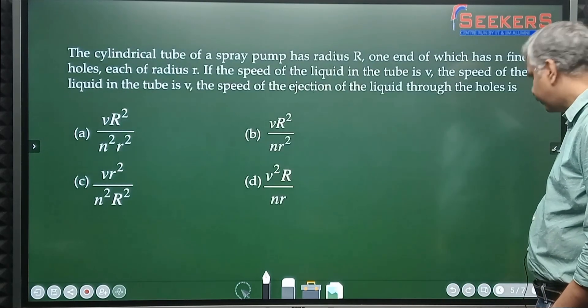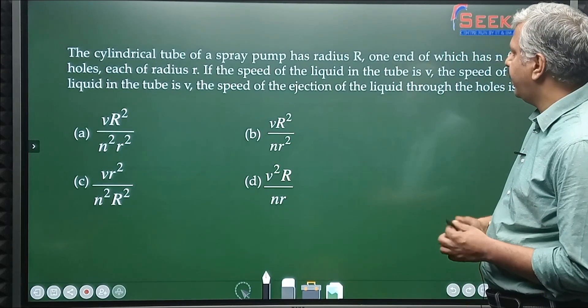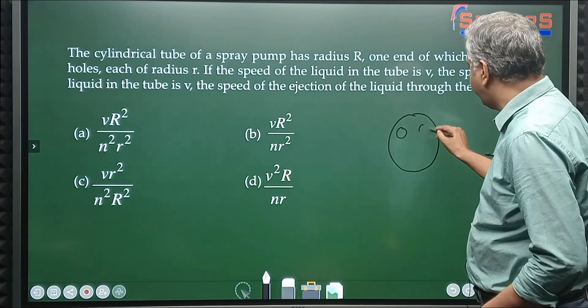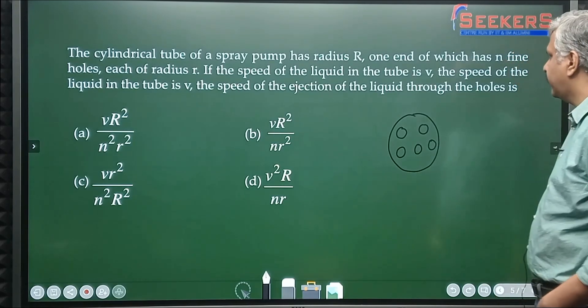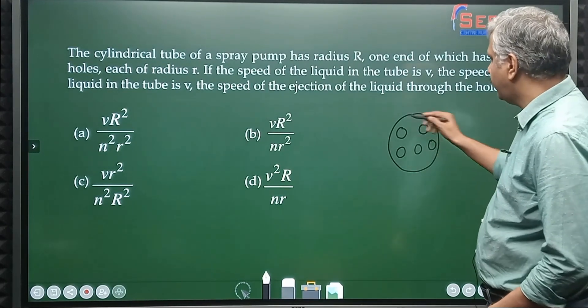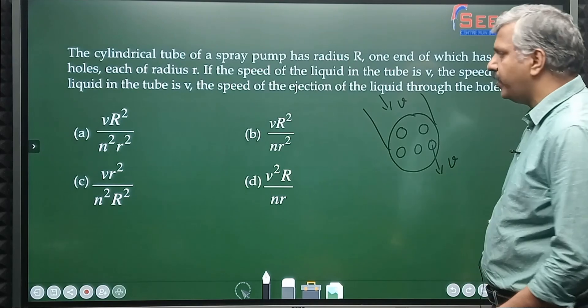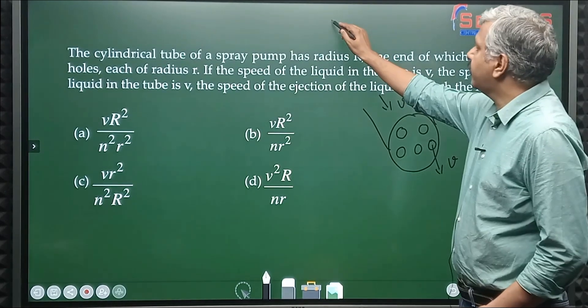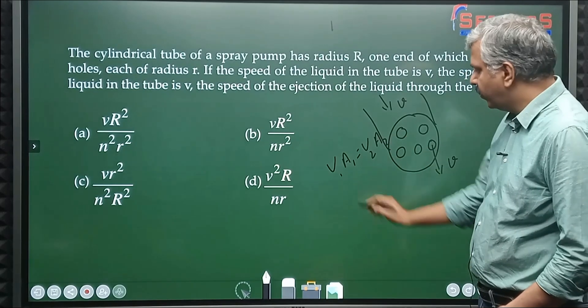Here there is one more question: A cylindrical tube of a spray pump has radius R, one end of which has n fine holes. If the speed of the liquid in the tube is v, the speed of ejection will be how much? All such cases of liquid flow we will simply use equation of continuity.